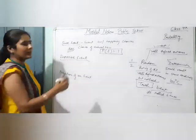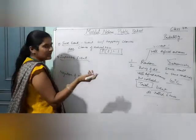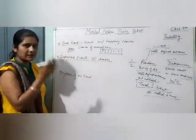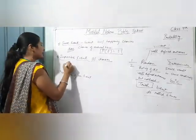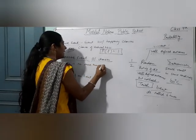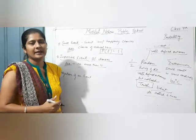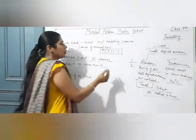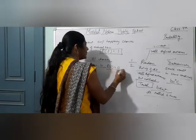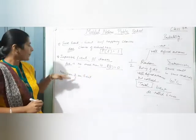Impossible event क्या होता है — जो कभी हो ही नहीं सकता, जिसके होने के 0% chances हों. For example, dice के case में if I say a number more than 10 — 10 से बड़ा number एक dice के case में नहीं आ सकता. तो उसके कितने chances हैं? 0. Probability of that event will be 0. तो impossible event हो गया.